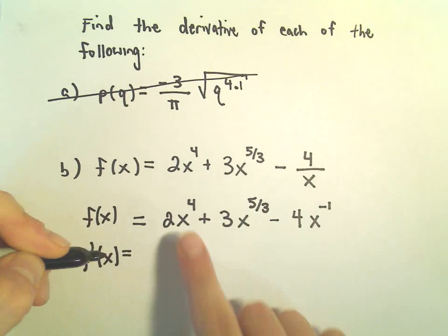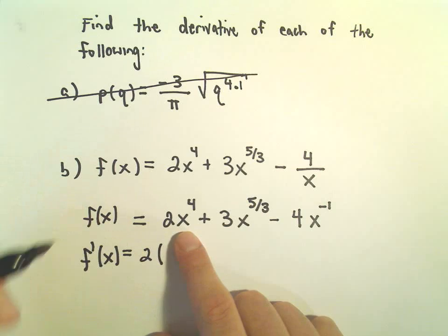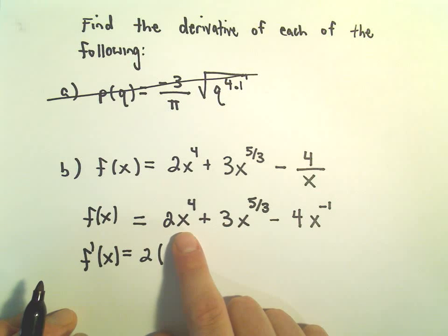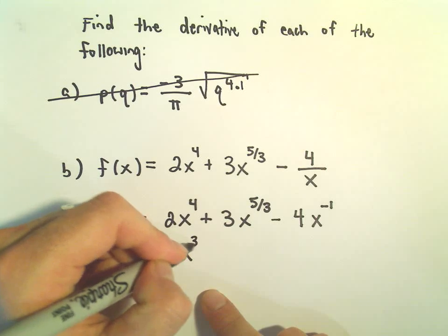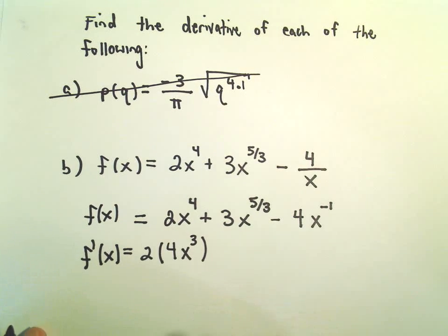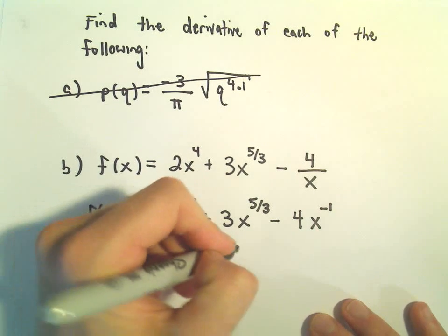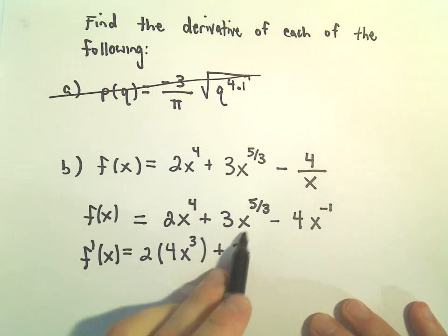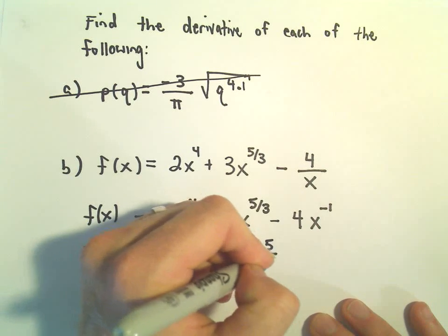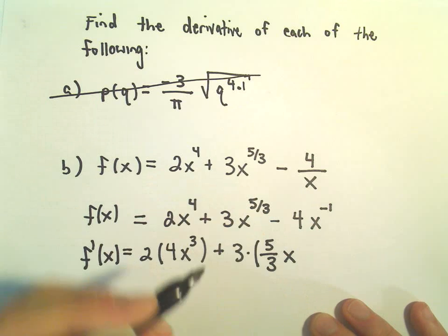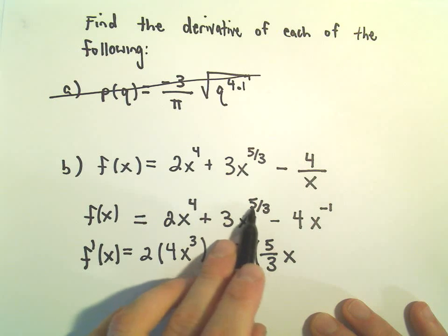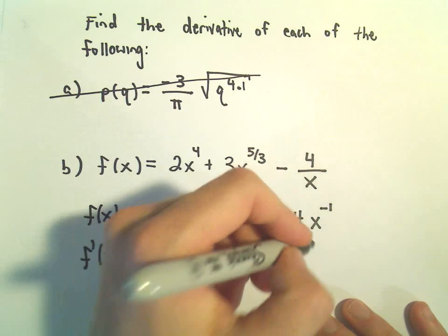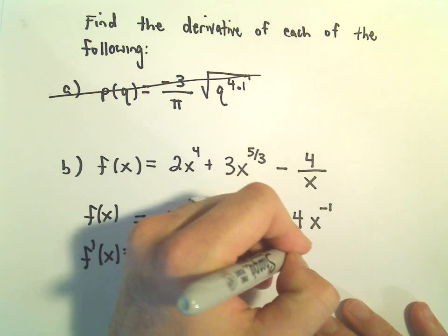So the 2, we'll just leave that alone for the moment. When we have x to the 4th, the 4 will come out front. We'll take 1 from the exponent, so that'll leave us with 4x to the 3rd plus 3 times. We have x to the 5 3rds, so the 5 over 3 would come out front. We would have x. If we subtract 3 over 3, because we're subtracting 1, so 5 over 3 minus 3 over 3 would give us 2 over 3.